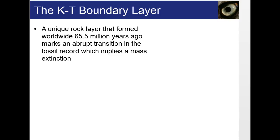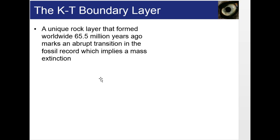The KT boundary layer is the layer of the Earth that occurred 65.5 million years ago and is thought to be left over from when the big asteroid hit the Yucatan Peninsula in Mexico. Below that layer we find dinosaur fossils quite numerous, but after that layer they become pretty sparse. Most scientists say this is no coincidence, and from the evidence they infer that an asteroid about 12 miles long actually did hit the Earth and caused a global catastrophe which brought the ending of the reign of the dinosaurs.